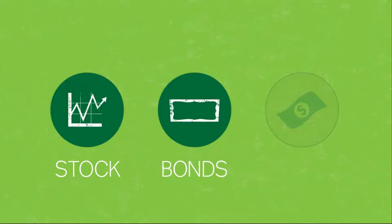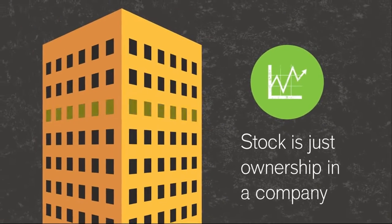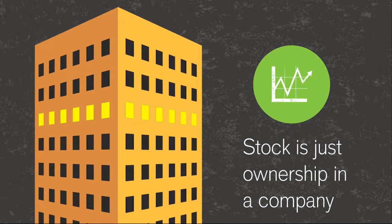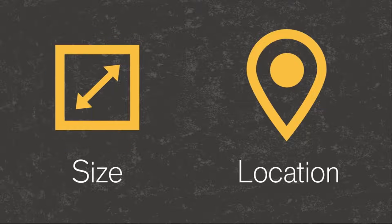Stock, bonds, and cash. Stock is just ownership in a company. There are many ways to classify stock. Two major ones are size, called market capitalization or cap, and company location. Each classification has its own typical level of risk.